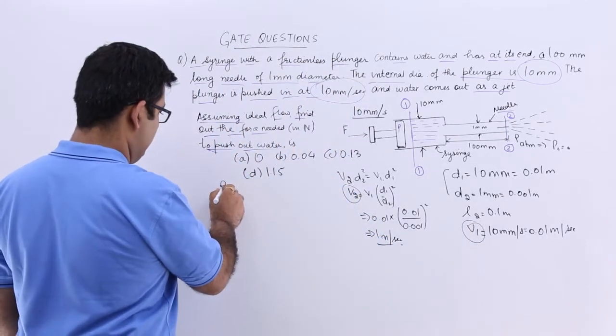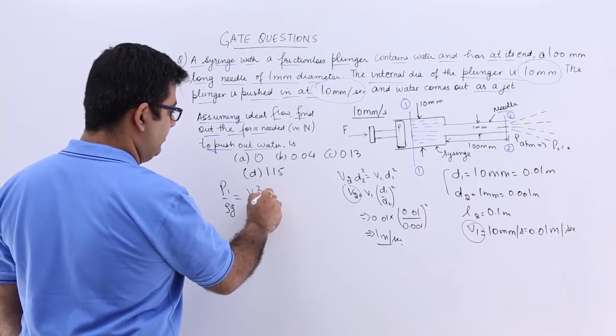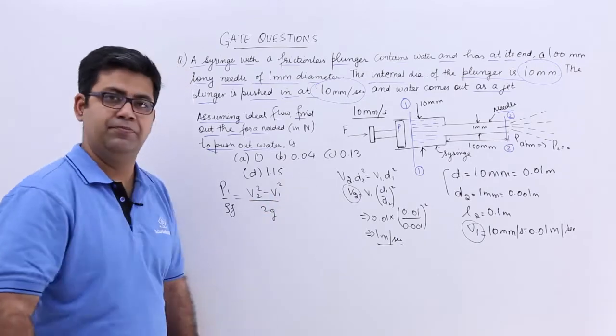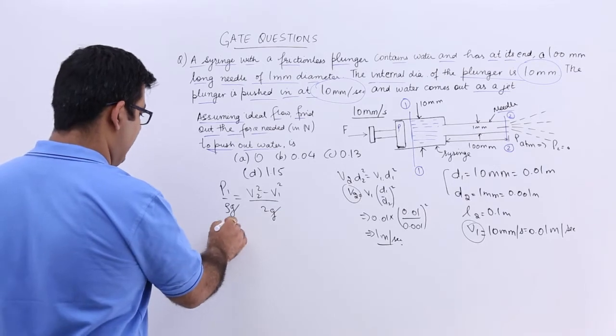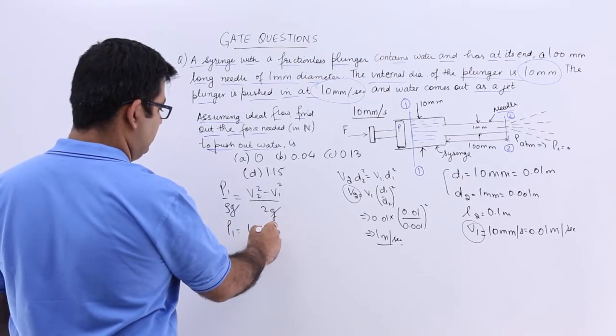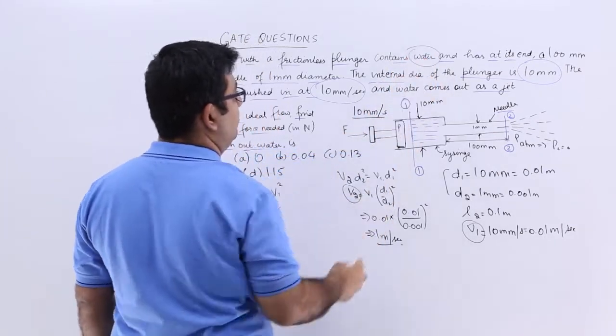So you will have P1 by rho g is equal to V2 square minus V1 square by 2g. So I can strike off this g and P1 will be equal to 1000, that is the density of water because we are talking about water only.